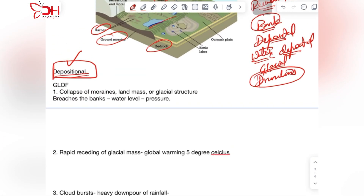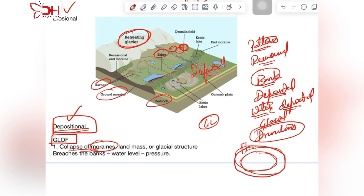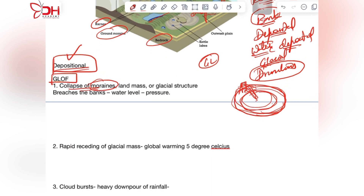After seeing the formation of glacial lakes, we will look at how glacial lakes lead to outbursts causing floods. If the collapse of moraines — the loosely built bank-like depositional structures — causes parts to fall into the lake, the water level in the lake increases and further breaches the entire moraine or bank structure. This leads to the outburst phenomenon and floods.